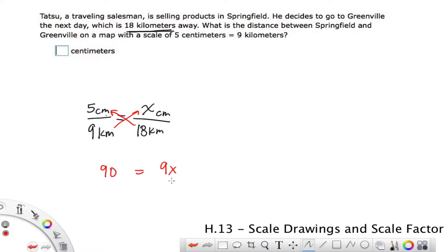So we have 9X equals 90, and you might be able to see the answer right away, but we still have to do the math. Divide by 9 on both sides because we want to undo this multiplying by 9. The opposite of multiplying by 9 is to divide by 9. Whatever we do to one side, you have to do to the other. So here on the right, it reduces to simply X, or 1X, and 90 divided by 9 is 10. So on the map, Greenville would be 10 centimeters.